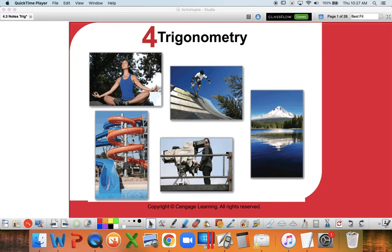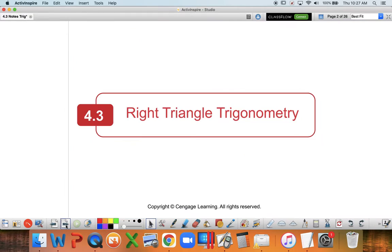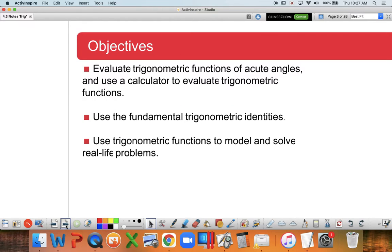This is trigonometry section 4.3, right triangle trigonometry. Our objectives are we're going to use our calculator to start evaluating trigonometric functions. We're also going to introduce some new identities and model some different problems.